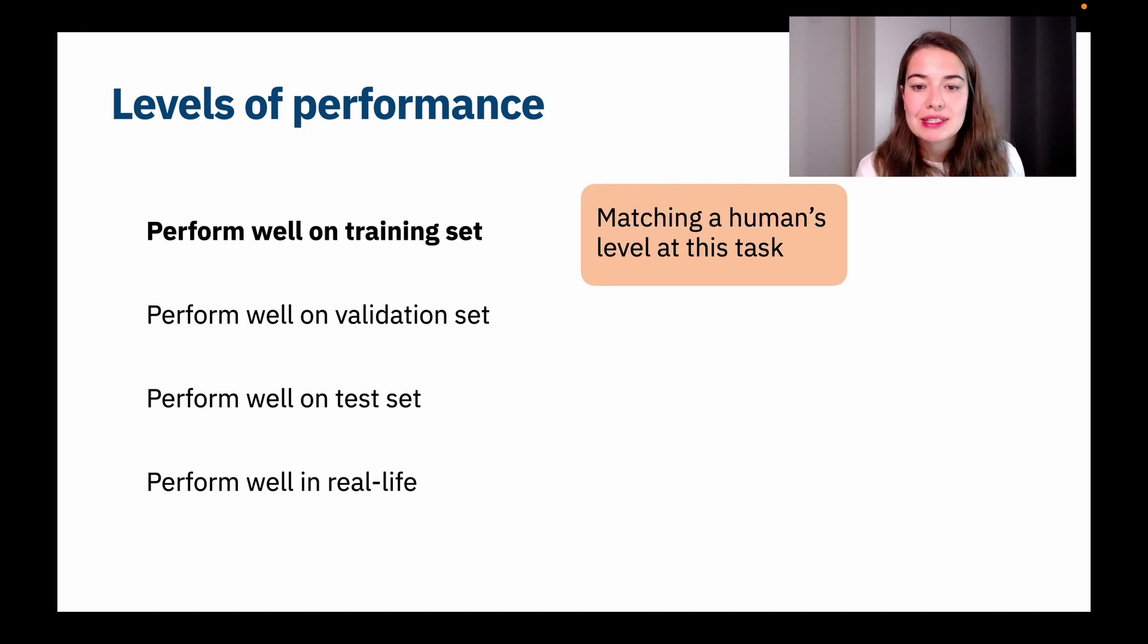Performing well on a training set basically means matching a human's level at this task. It doesn't always have to be matching, but at least getting closer to it. So you always take a human's performance on a task, and then you strive to at least meet it. And sometimes it's even possible to surpass it, but we'll talk about this in a second.